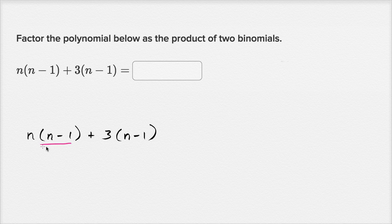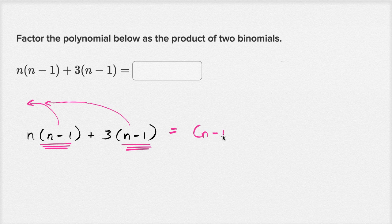And notice, both of them have an n minus one as a factor. So what we could do is factor out the n minus one, or you could view it as undistributing the n minus one. And if we do that, we're gonna factor out the n minus one.